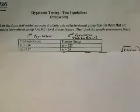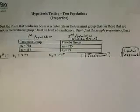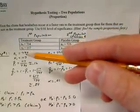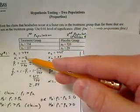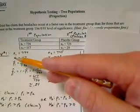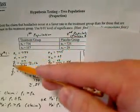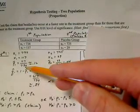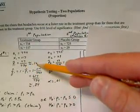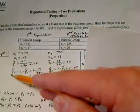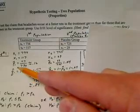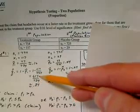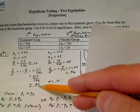In order to conduct a hypothesis test, we first identify the given values in symbolic form. N₁, the sample size of the treatment group, is 734. X₁ is 117. P̂₁, the proportion of people who experienced a headache, was 117 over 734, which is approximately 0.16. Q̂₁, those who did not experience a headache, is the complement 1 minus P̂₁, or 1 minus 117 over 734, which gives 617 over 734, or approximately 0.84.